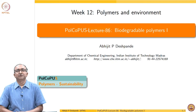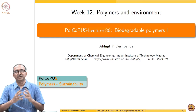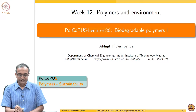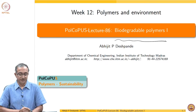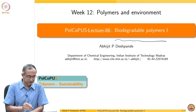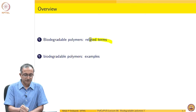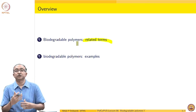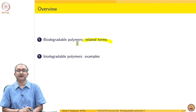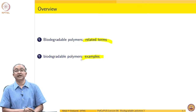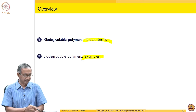Hello, we continue our discussion of polymers and their presence in the environment by focusing on biodegradation. In this particular lecture, we will look at some examples of biodegradable polymers, and the focus will remain on sustainability. We will first look at some related terms associated with description of macromolecules of different kinds and the relevance of the biological world to macromolecules. Then we will finish by looking at some prominent biodegradable polymers.